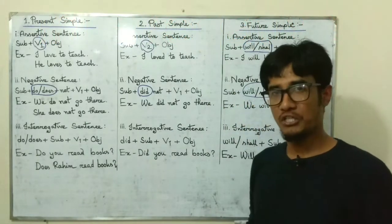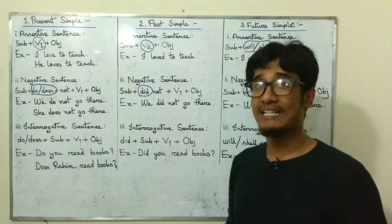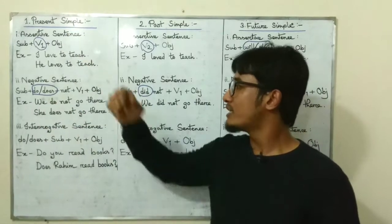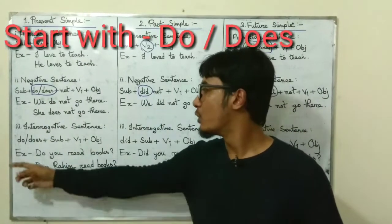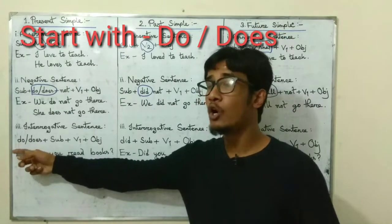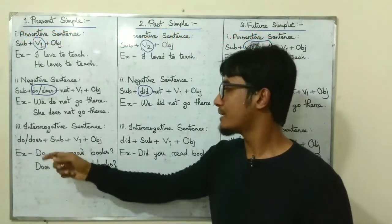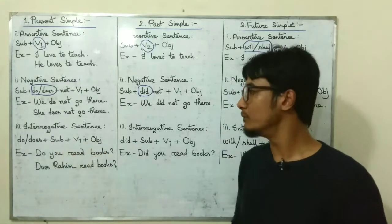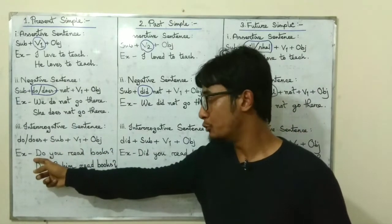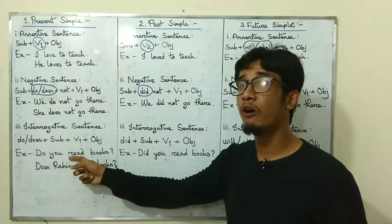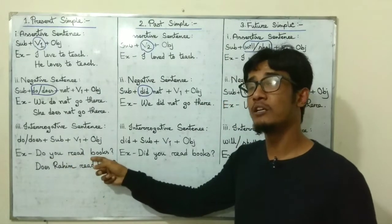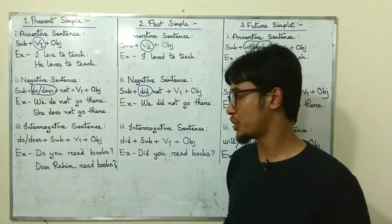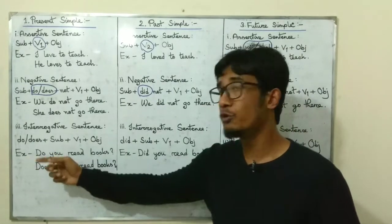We have to make a lot of questions in our conversation, so interrogative sentences are very essential to learn. In present simple we start the interrogative sentence with an auxiliary verb — either do or does — then we put a subject, then the base form of a verb V1, and finally an object. For example: auxiliary verb do, subject you, base form of a verb read, object books — 'Do you read books?'